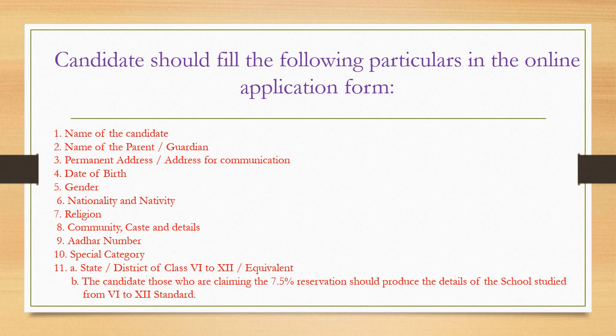The following particulars should be ready before filling the online application form: the name of the candidate, the name of parent or guardian, permanent address, address for communication, date of birth, gender, nationality and nativity, religion, community, caste and details, and Aadhaar number.